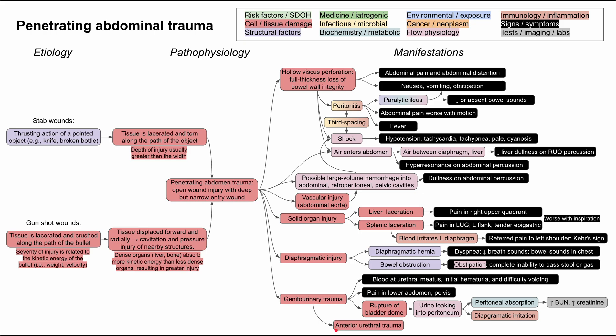One last thing: anterior urethral trauma can lead to scrotal hematoma, which might be another sign of trauma to the lower abdomen or pelvis. This has been a video on penetrating abdominal trauma. I hope it was helpful, and thank you for listening.